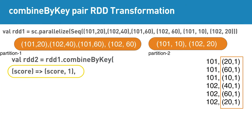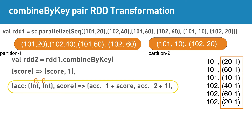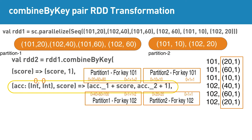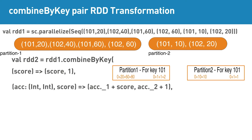The first parameter creates the combiner as (score, 1). The second parameter is to merge the values. Here, acc._1 and acc._2 are automatically initialized with zero. This parameter will add the scores together, and it will also add all ones to get the number of scores. Since this is a combineByKey transformation, the merging of values is done for each key. The third parameter is to merge the combiners.